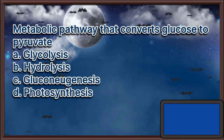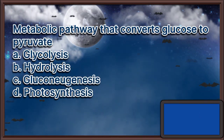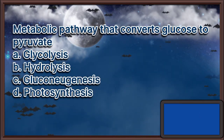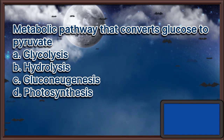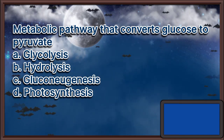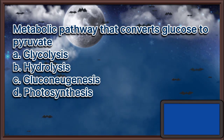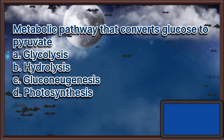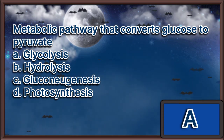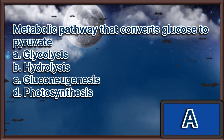Metabolic pathway that converts glucose to pyruvate. A. Glycolysis. B. Hydrolysis. C. Gluconeogenesis. D. Photosynthesis. The answer is letter A.